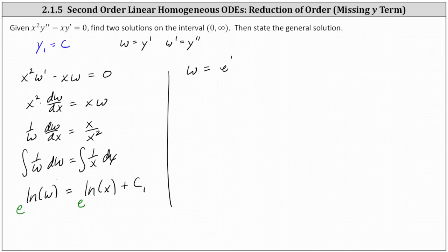e to the power of c sub one is just some constant we'll call c sub two. e to the power of natural log x is equal to x. We have w equals c sub two times x.